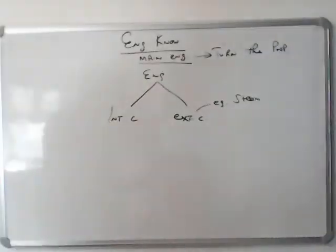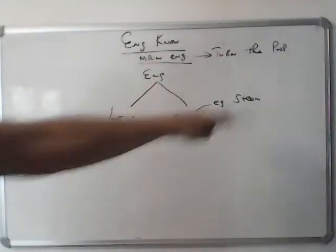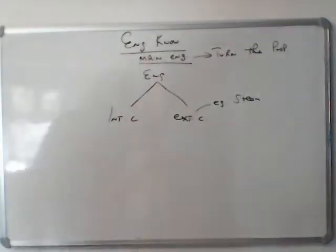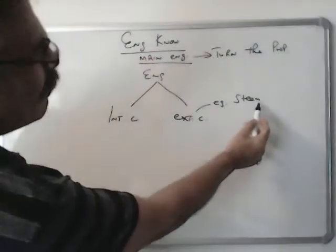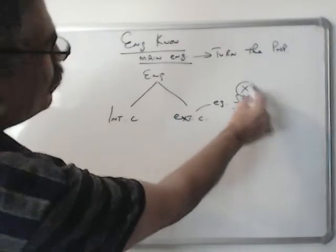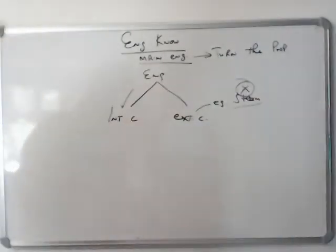Steam is generated in the boiler and then it goes to the engine and turns the turbines. These engines are now obsolete on the ship. Mostly we have internal combustion engines.